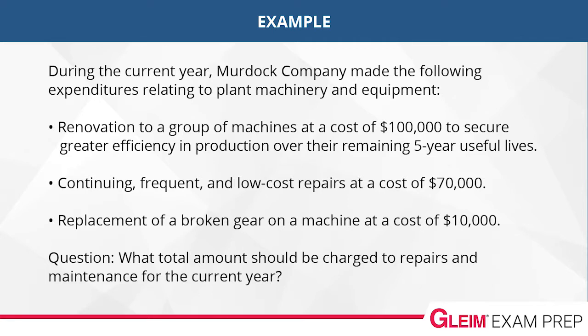Here's an example of a CPA exam type question that tests your knowledge of the concept that we just discussed. During the year, Murdoch Company made the following expenditures relating to plant machinery and equipment: renovation to a group of machines at a cost of $100,000 to secure greater efficiency in production over their remaining five-year useful lives; continuing, frequent, and low-cost repairs at a cost of $70,000; and replacement of a broken gear on a machine at a cost of $10,000. What total amount should be charged to repairs and maintenance for the current year? The $100,000 renovation should be capitalized and will not be expensed or charged to repairs and maintenance in the current period. The other two items maintain the assets and would be expensed as repairs and maintenance. So the answer is $80,000.